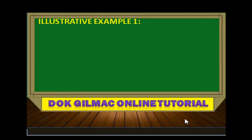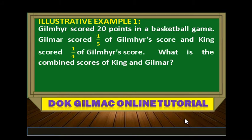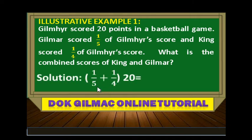Illustrative example number 1: Gilmir scored 20 points in a basketball game. Gilmar scored one-fifth of Gilmir's score, and King scored one-fourth of Gilmir's score. What is the combined score of King and Gilmar? So we have one-fifth plus one-fourth of 20 as the combined scores of King and Gilmar.